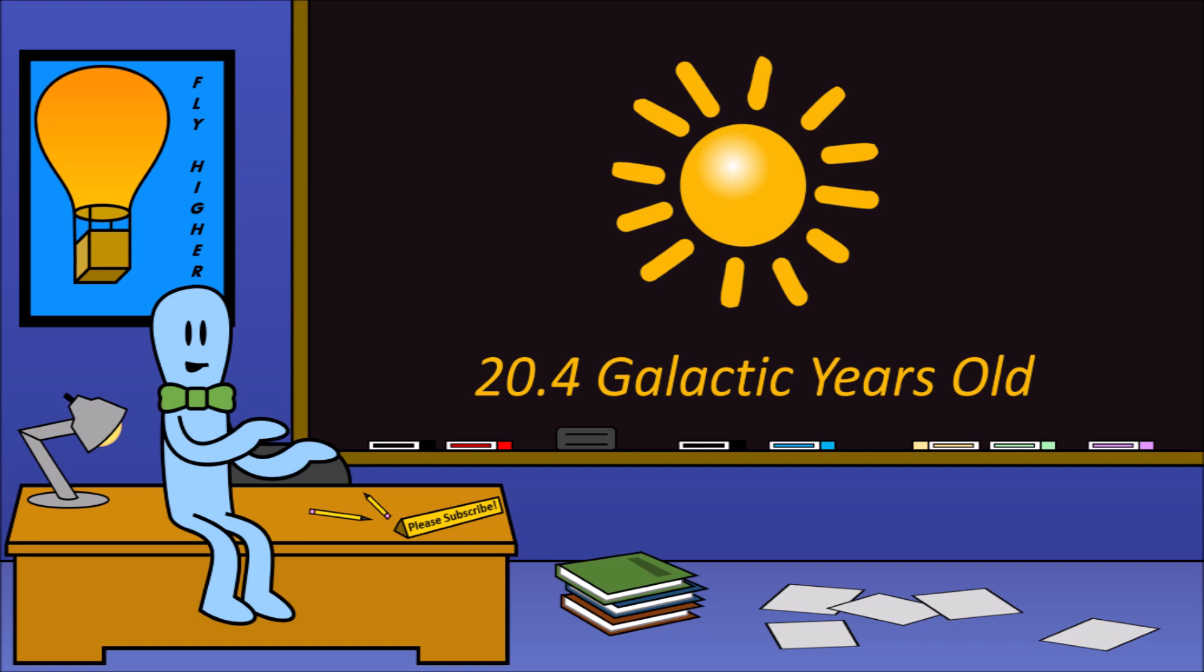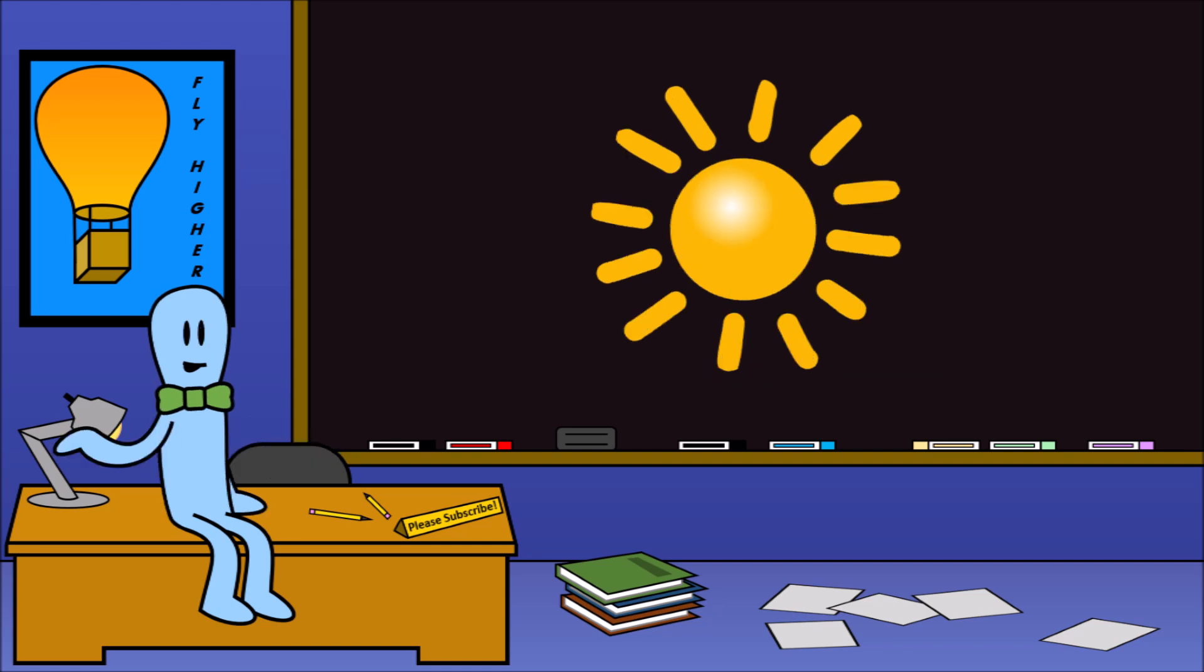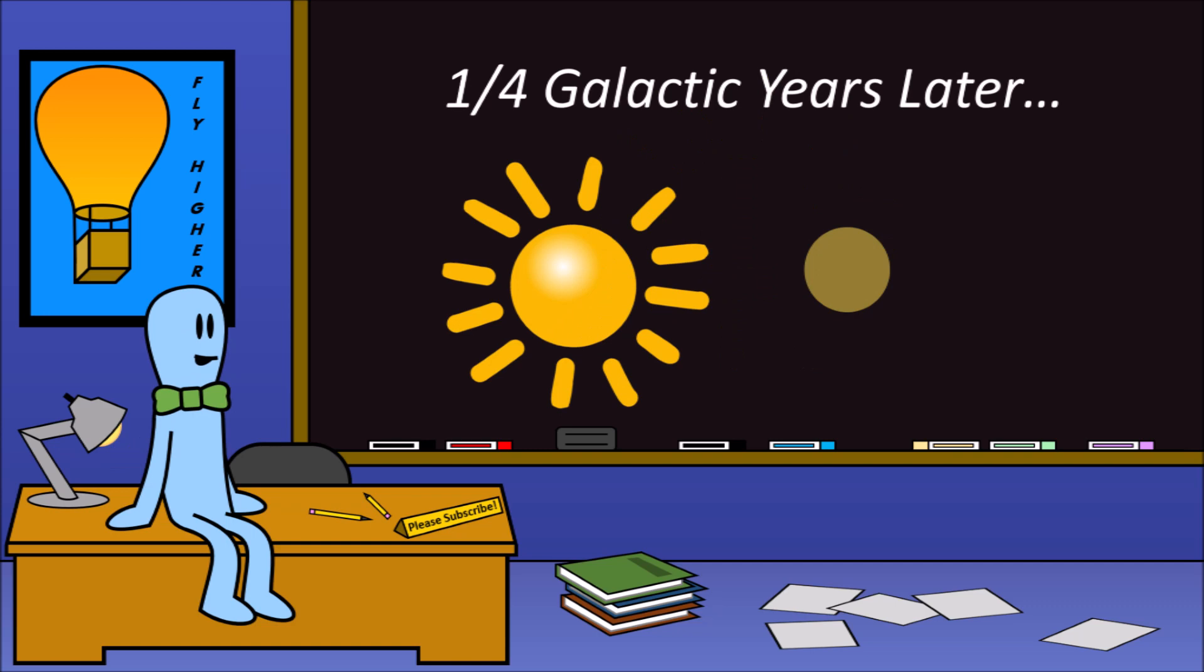And a little fun fact, our sun is now 20.4 galactic years old, almost old enough to galactically drink. After our sun formed, it took a quarter of a galactic year for the earth to form.